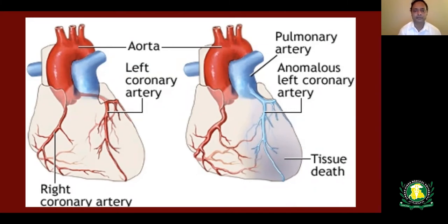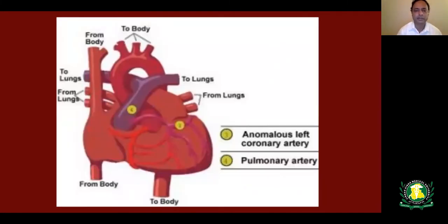Those patients have symptoms at a very early part of their life, such as heart failure and angina, and they don't reach adult life unless the anomaly is corrected. Another congenital coronary artery disease is the anomalous origin of the left coronary artery from the right coronary cusp, where the left coronary artery travels between the aorta and pulmonary artery. Due to the pulsatile movement of these vessels, it causes intermittent compression of the coronary artery, resulting in angina.